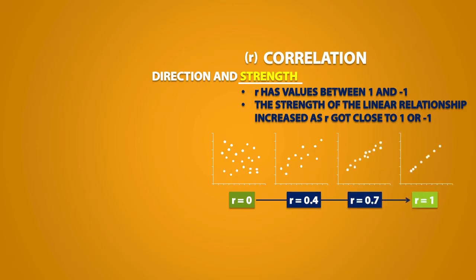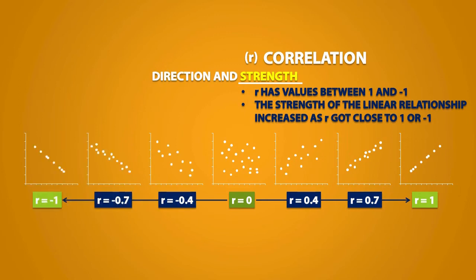We can see that as r gets closer and closer to positive 1, the linear relationship gets stronger, and as r gets closer and closer to negative 1, the linear relationship also gets stronger.